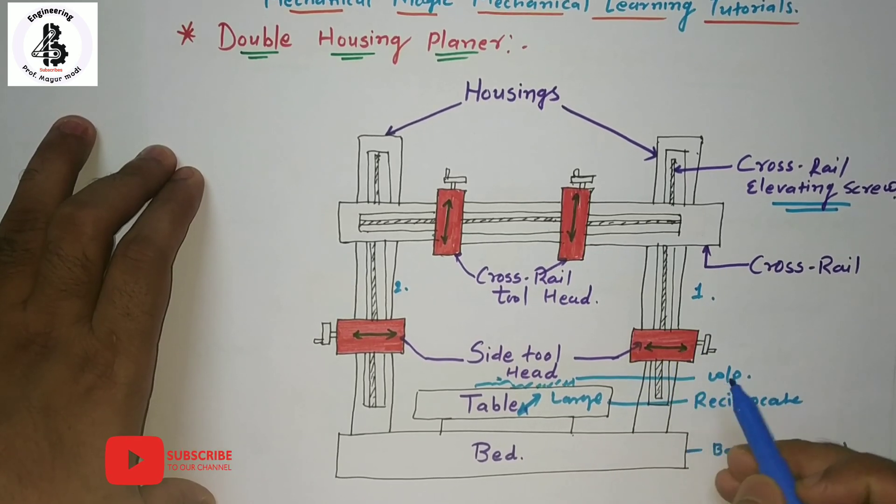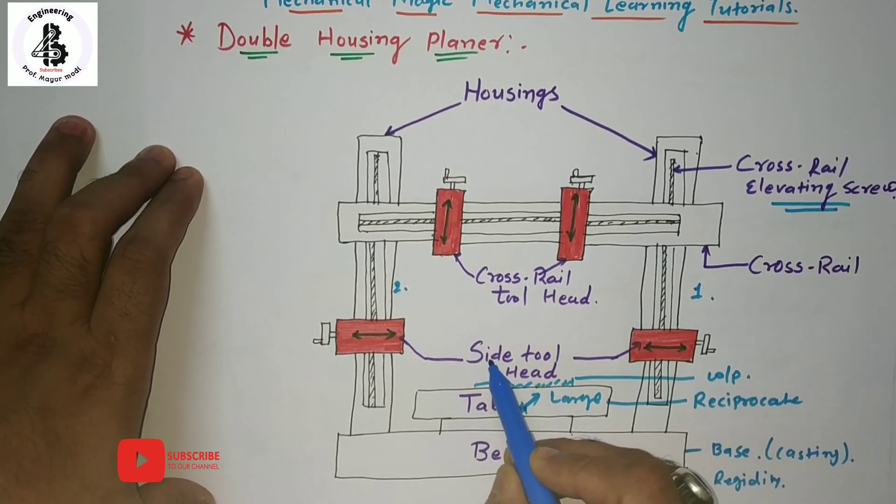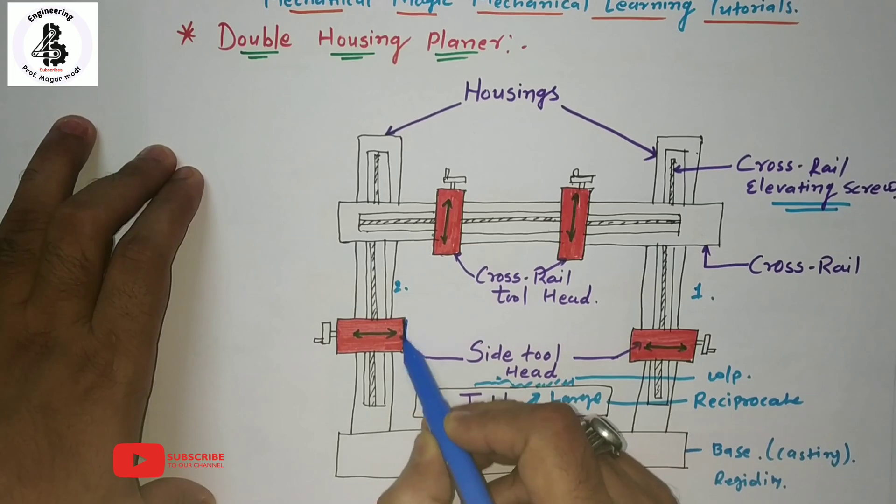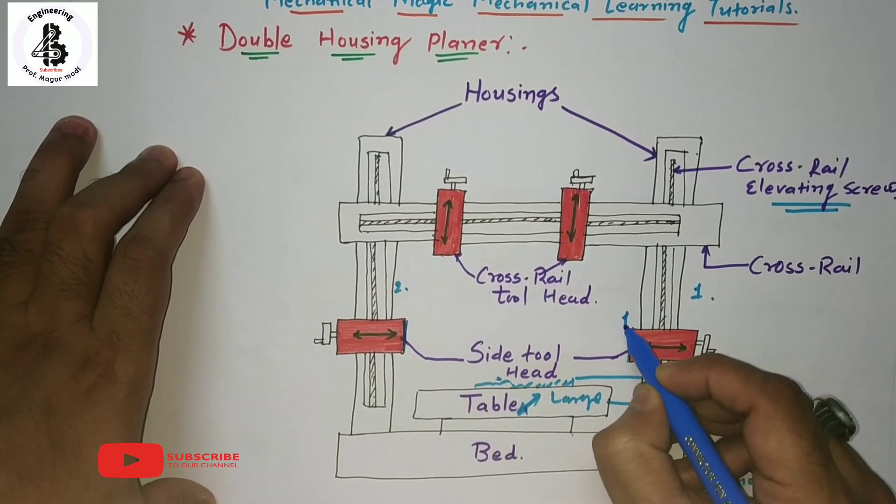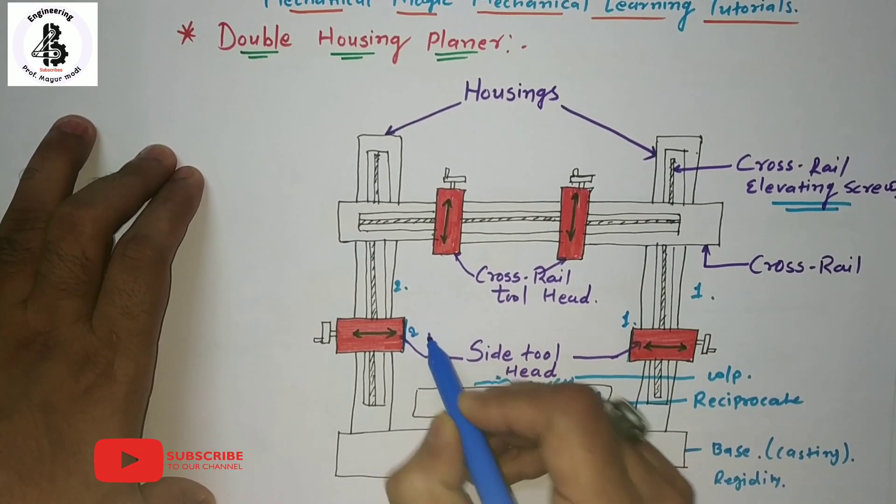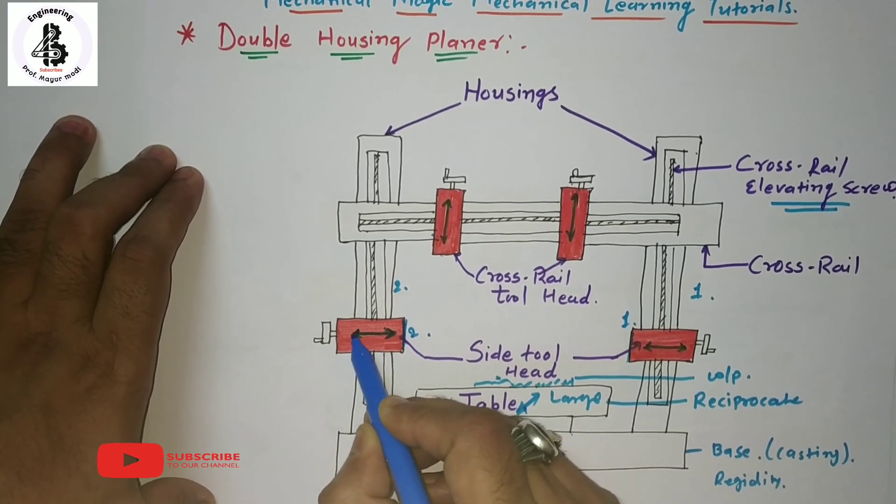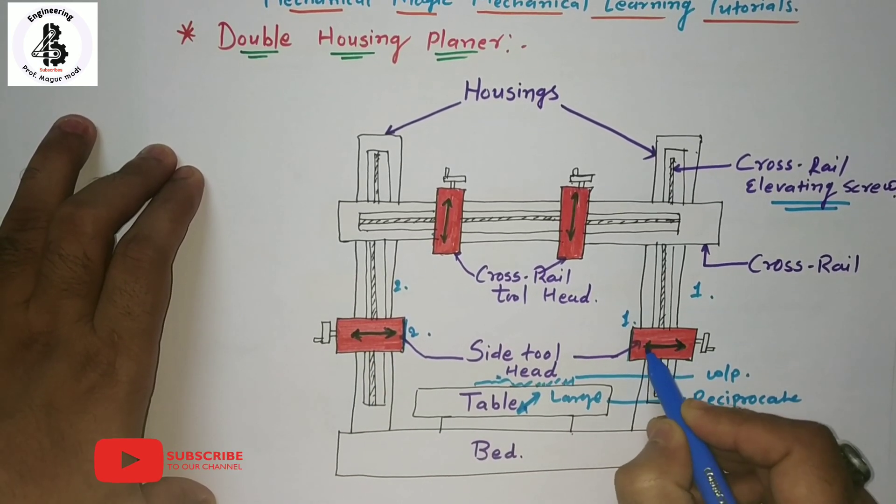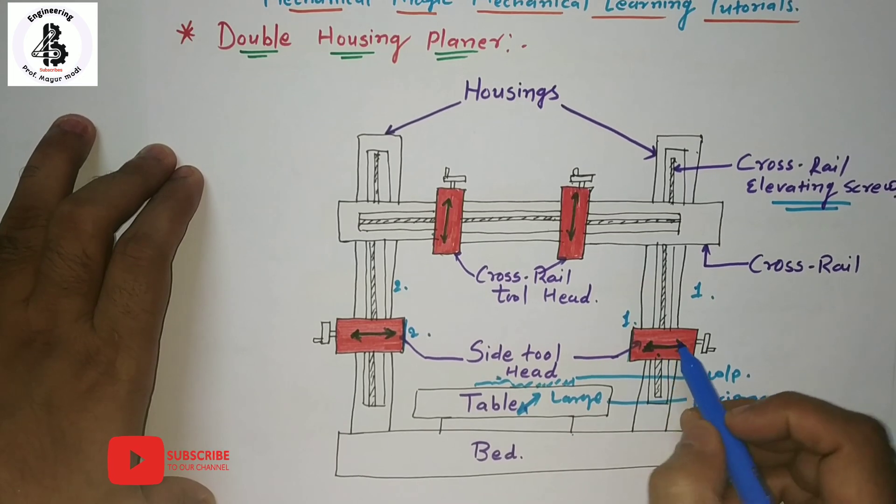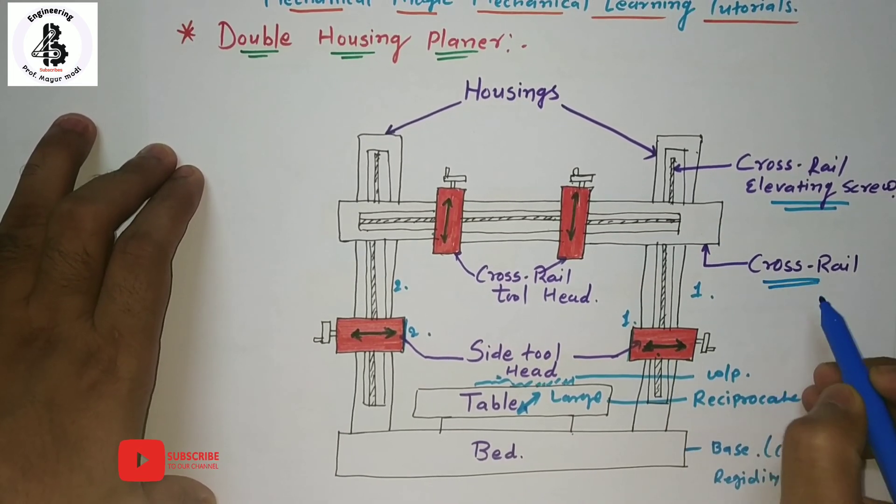By the two columns with that facility, it will be having two more side tools. These are the two tools, one and two, and they will reciprocate onto the horizontal directions. That will be the cross rails we already discussed in my previous lectures.